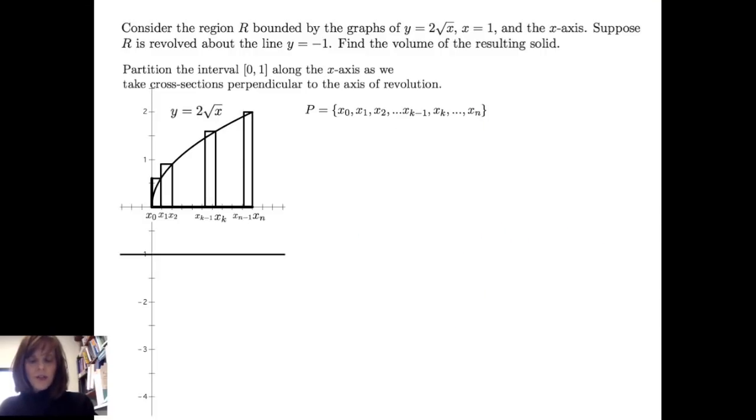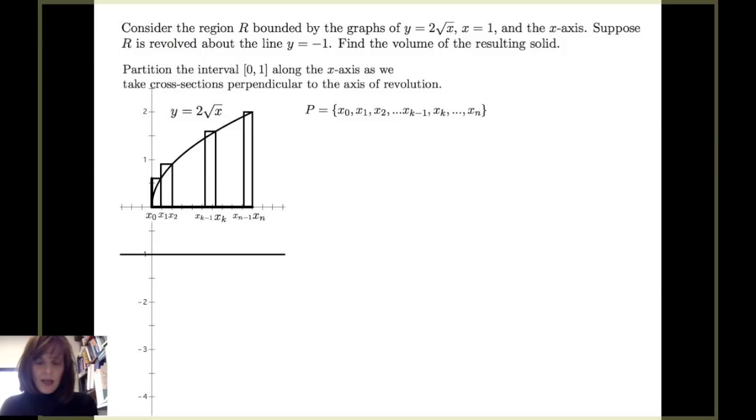We're going to take cross-sections that are perpendicular to the axis of revolution. We'll partition the interval from 0 to 1 along the x-axis. So we have the partition x sub 0, x sub 1, up through x sub k and x sub n.